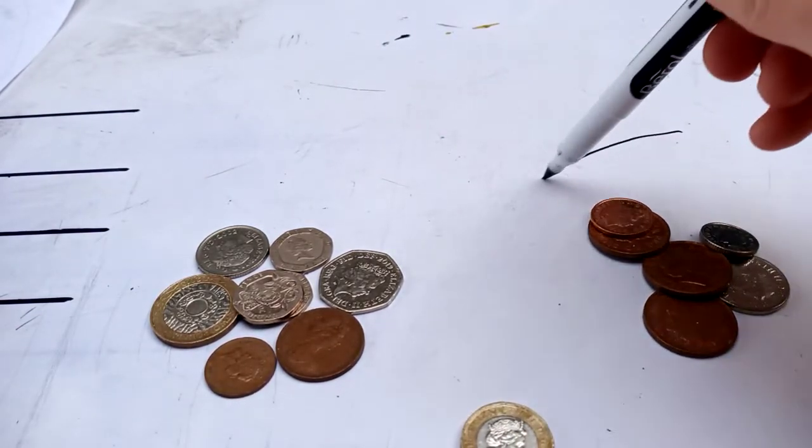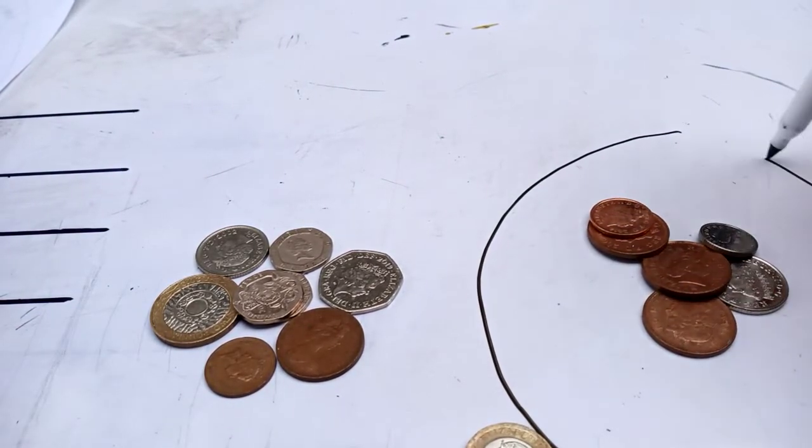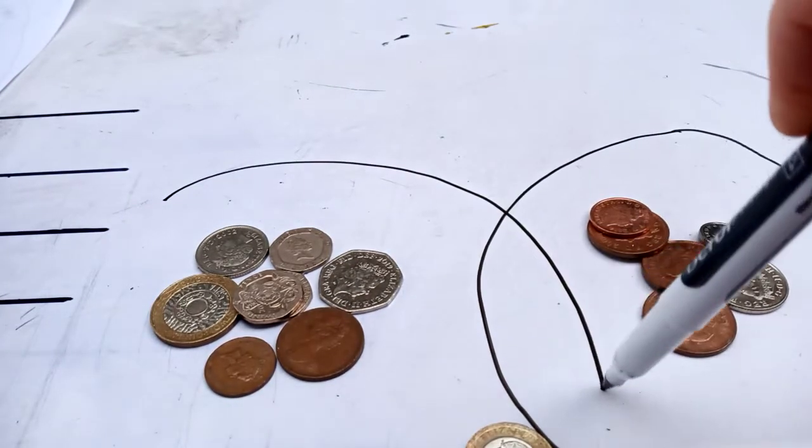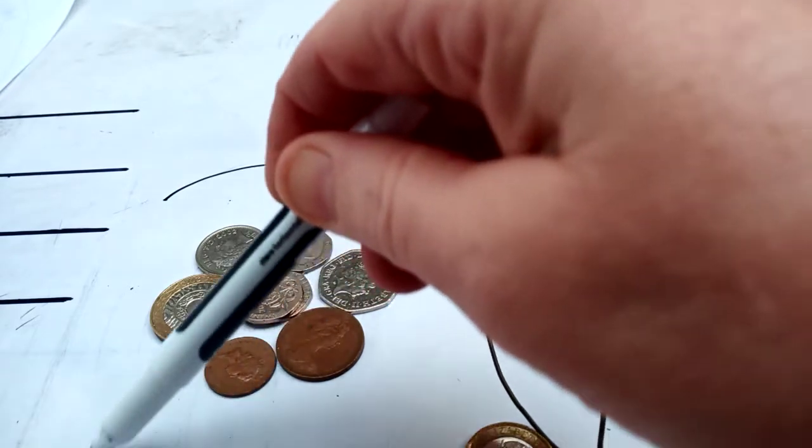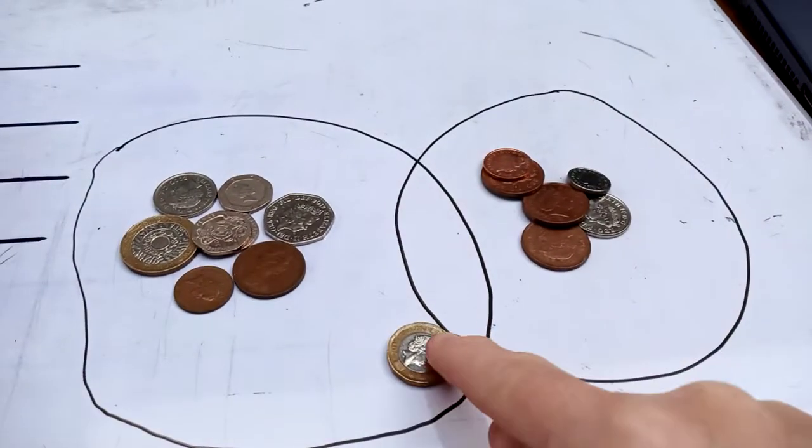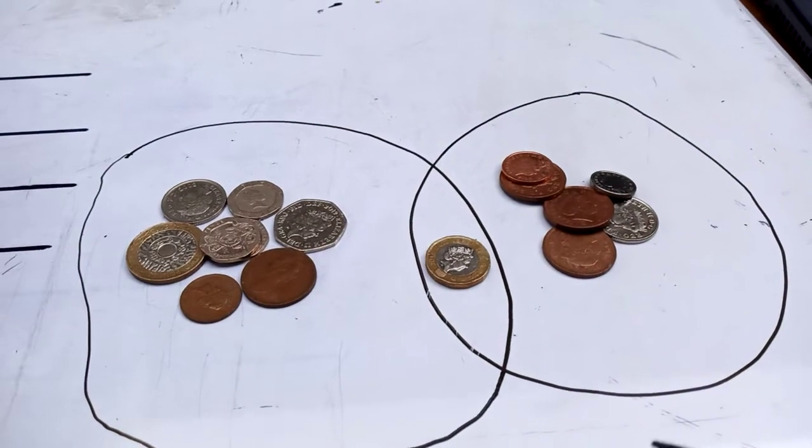So they're my magnetic ones, these are my non-magnetic ones. Join them up and in the middle where they cross over I've got the kind of magnetic.